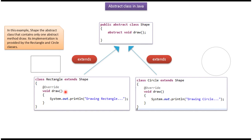Rectangle provides an implementation of the abstract method draw. Here you can see the Circle class, which also extends abstract class Shape and provides its own implementation of the abstract method draw.